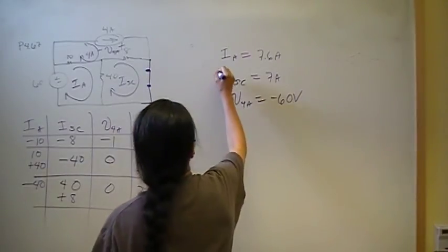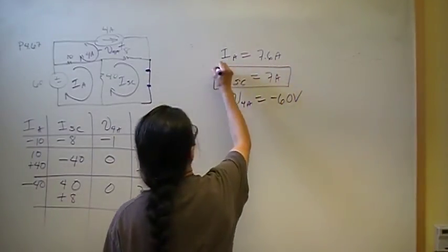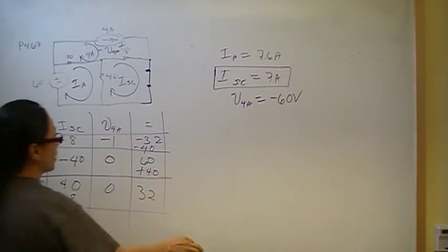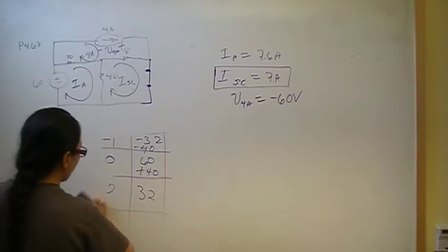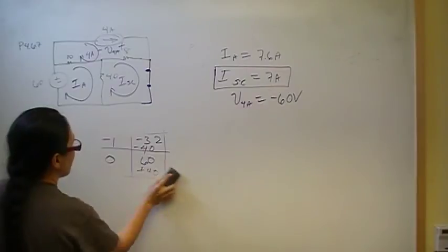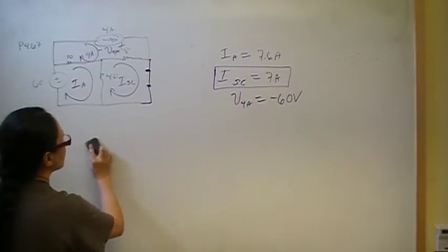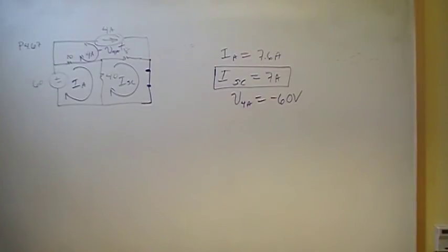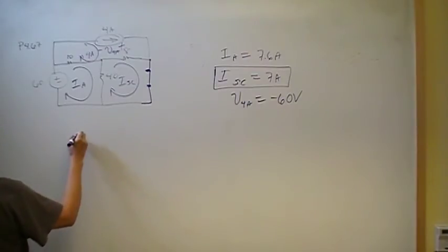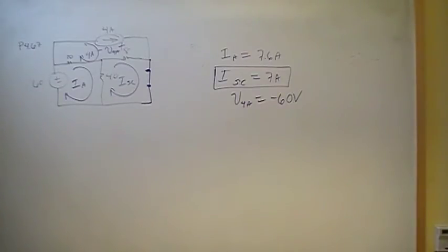That's part one of what we're looking for. We needed I short circuit, which is 7 amps. The next part is finding R_Thevenin. This circuit has all independent sources, so we can disable them to find the resistance seen by the load. We disable independent sources by opening current sources and shorting voltage sources.